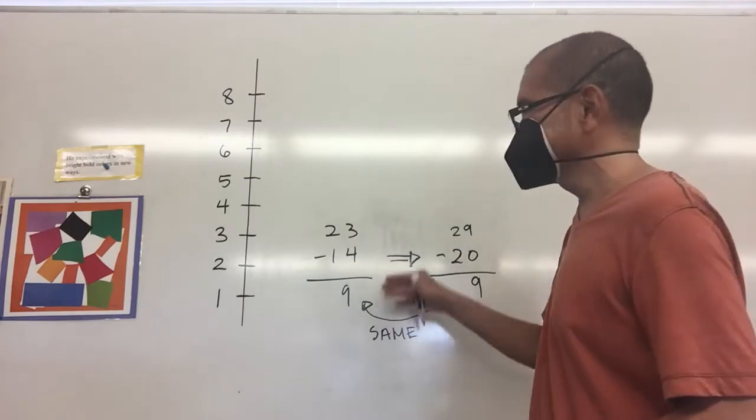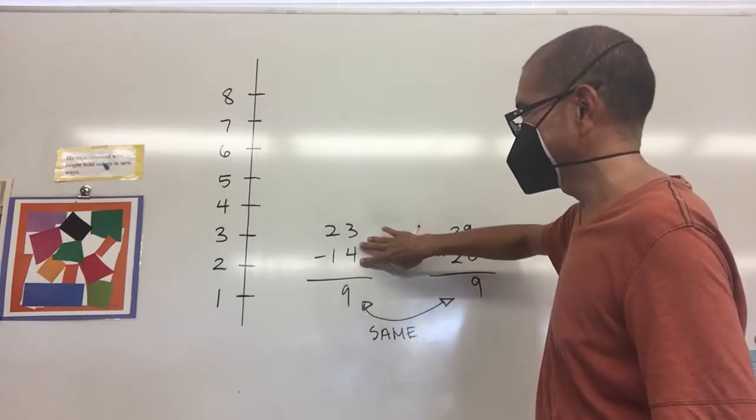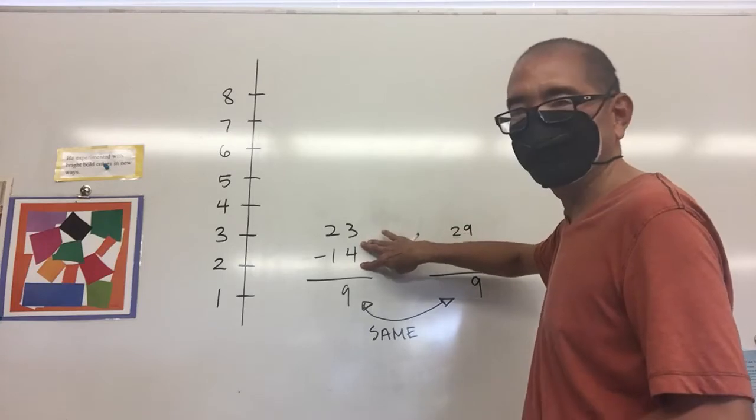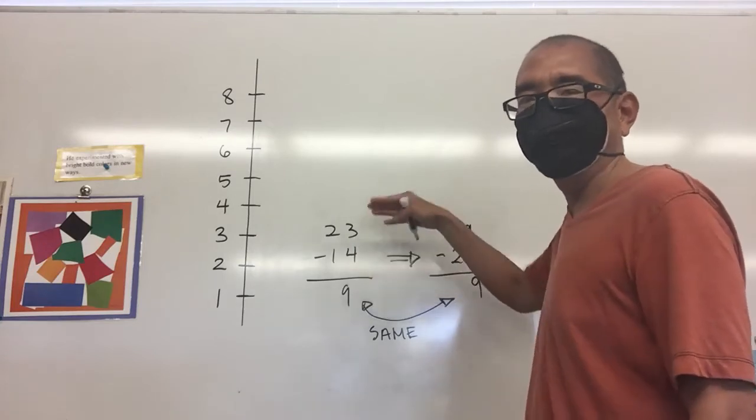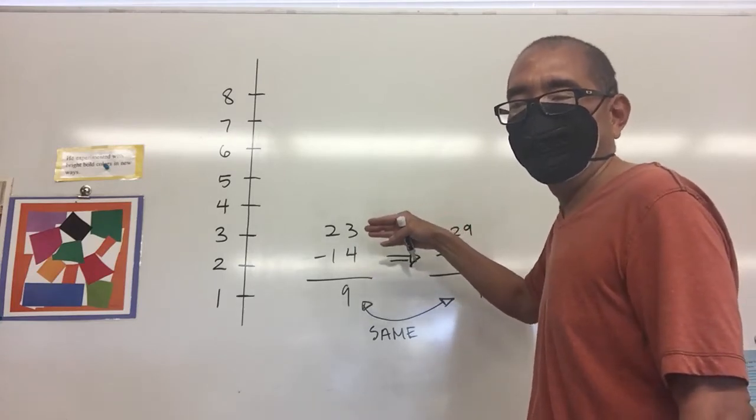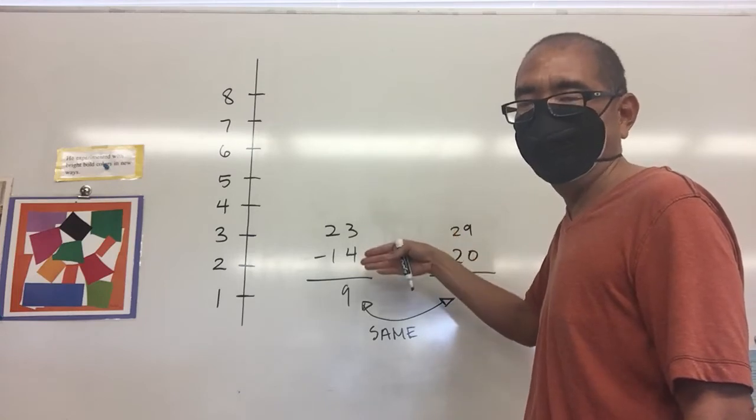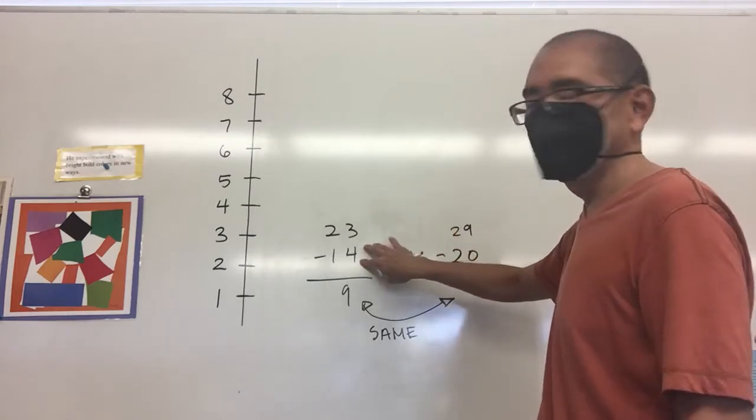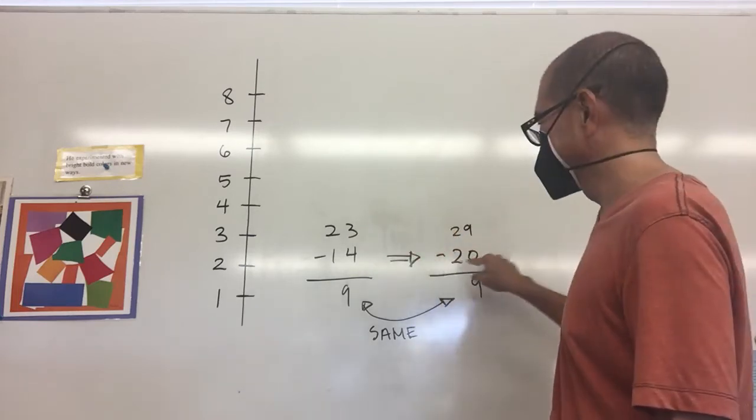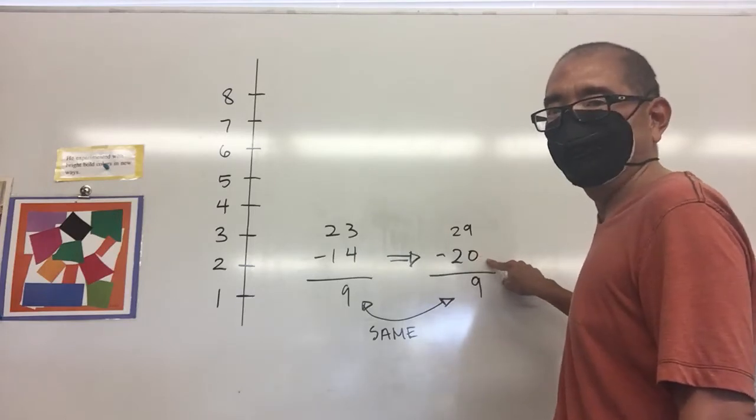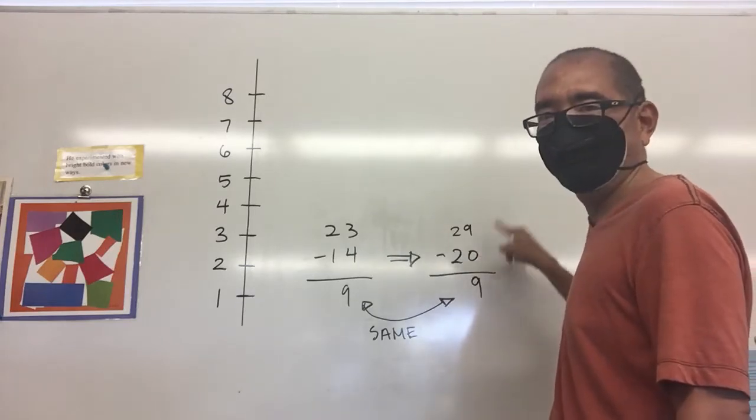The purpose is to take that number that you're subtracting, raise it to the next level of the multiple of 10, and you do that because it's a whole lot easier to subtract a zero from another number.